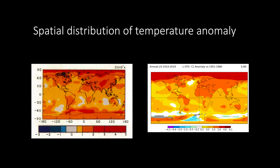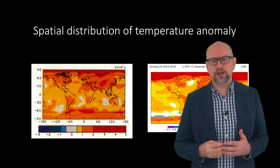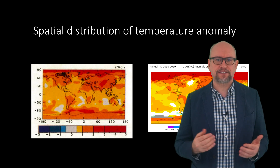However, as you can see, Hansen's model correctly projected amplified warming in the Arctic, as well as hot spots in Northern and Southern Africa, West Antarctica, and more pronounced warming over the land masses of the Northern Hemisphere, among other things. The spatial distribution of the warming is very close to his projections. Hansen's work was stunningly accurate, quite frankly.